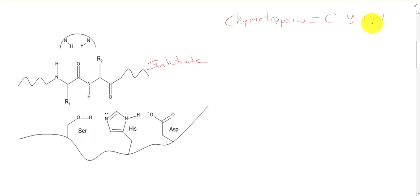For example, chymotrypsin would cut C-terminal to Y, F, and W. That would be here in our R1. That would be Y, F, and W for chymotrypsin. For trypsin, we would cut C-terminal to R and K, so that means we'd have an arginine or lysine here at R1.